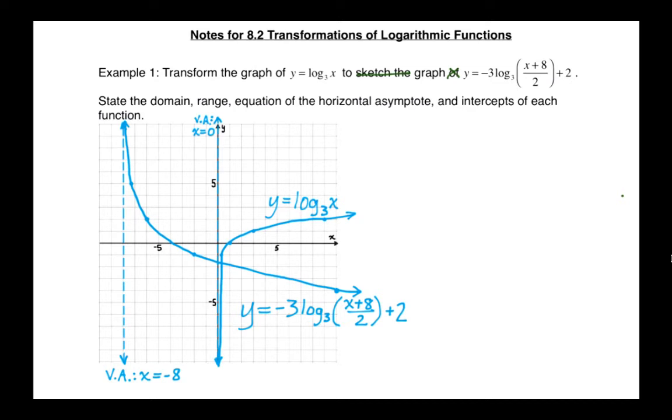So I did the initial graph, y equals log base 3 of x. And I did transformations to graph this new one. And here's what we get. The next thing we want to do is we want to talk about all the features. So domain, range, equation of the horizontal asymptote. We want to talk about some intercepts for the function and see how that goes. So I'm going to set up a table to talk about all these things.